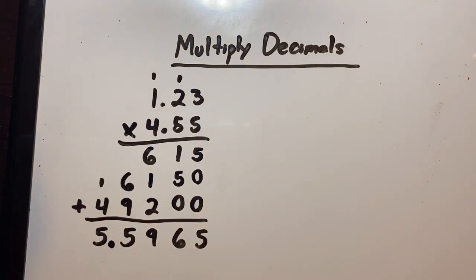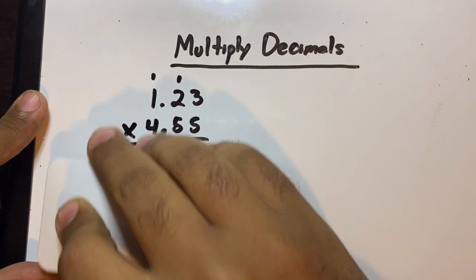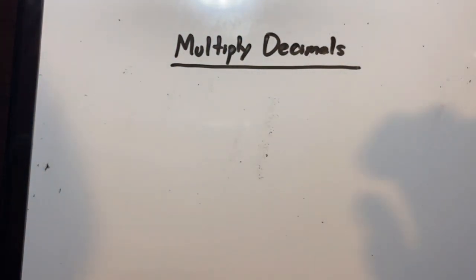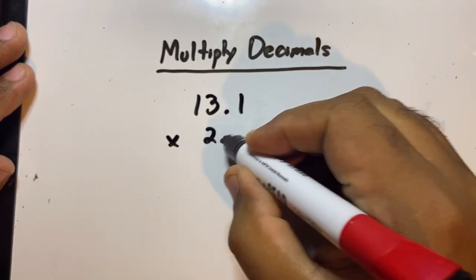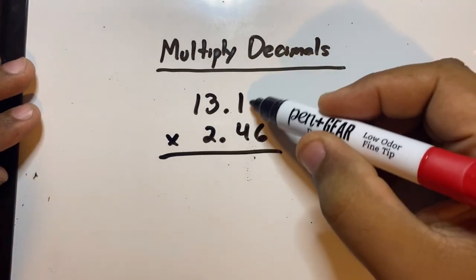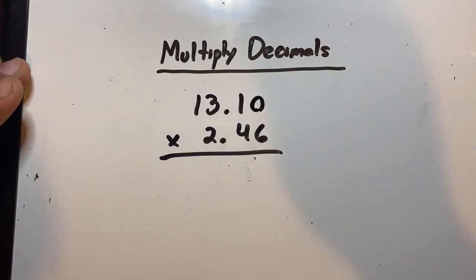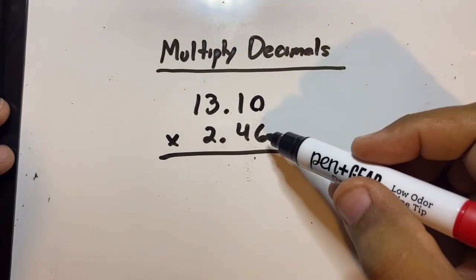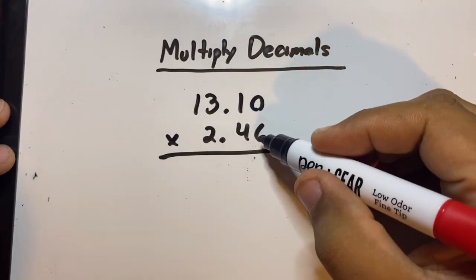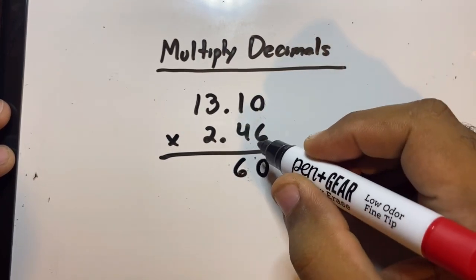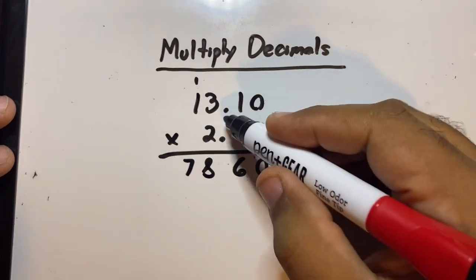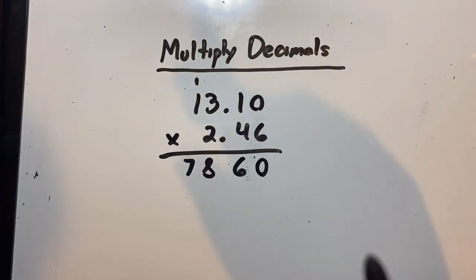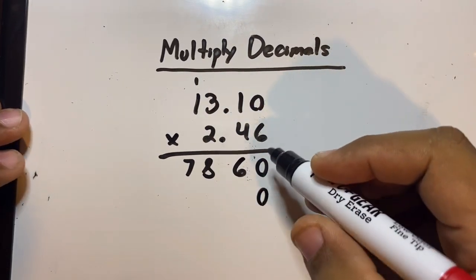It may not always work for every equation, but for now I think this will help. Let's do one more equation: 13.1 times 2.46. There's an empty spot here — don't panic, just put a zero. So just like before, each bottom number multiplied to each top number. Six times zero is zero. Six times one is six. Six times three is 18. Six times one, plus one, is seven. Don't worry about the decimals — we're multiplying, so don't touch the decimal points yet.